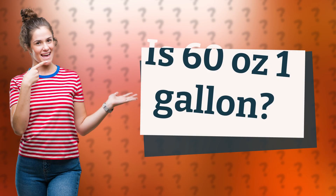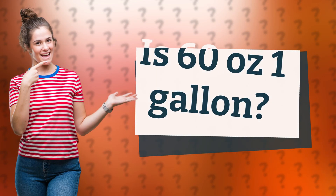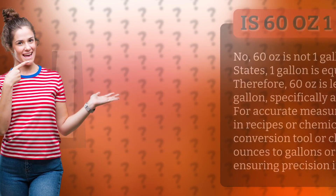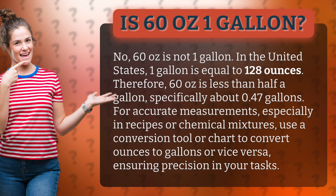Is 60 ounces one gallon? No, 60 ounces is not one gallon. In the United States, one gallon is equal to 128 ounces.